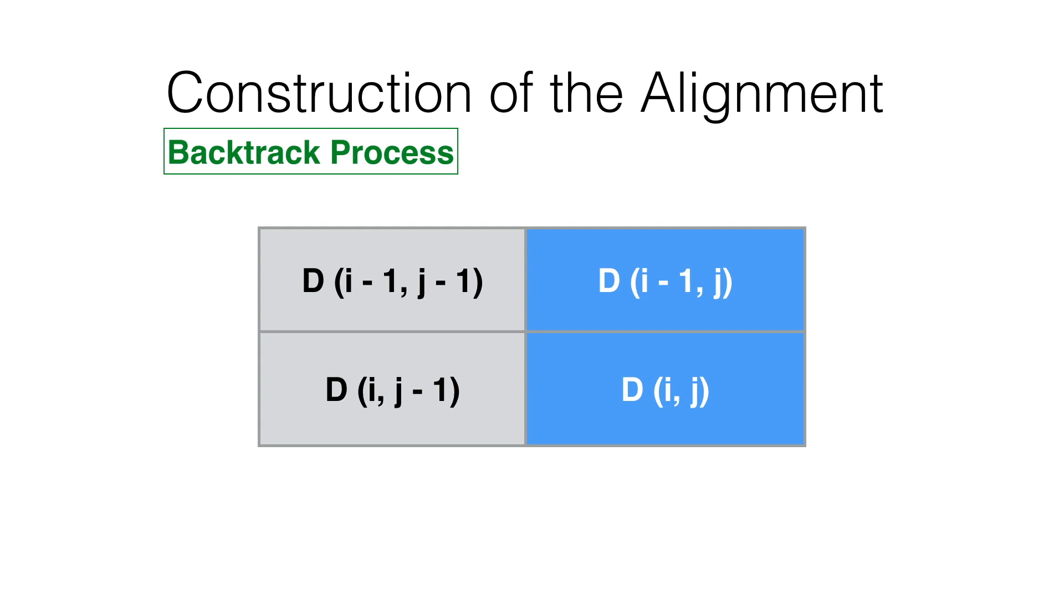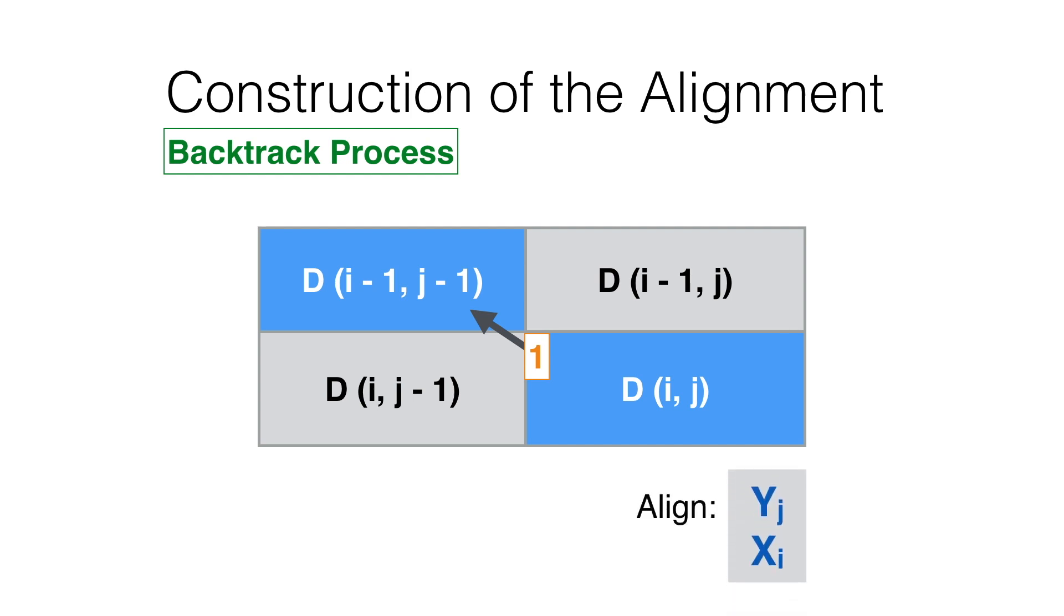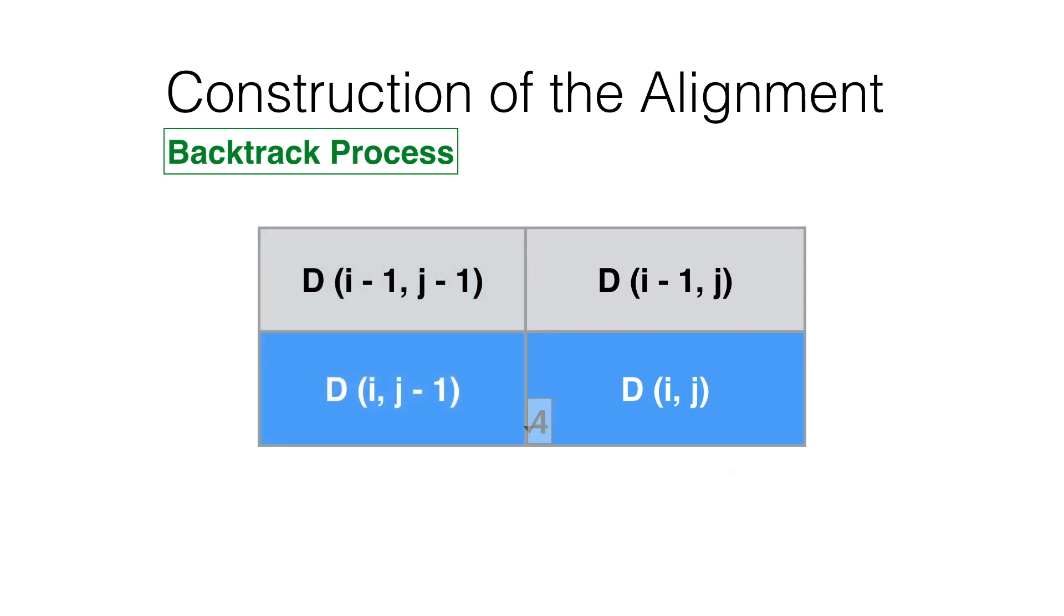More specifically, if we are in position (i,j) and the array of pointers has a 2 in its (i,j) position, one moves one cell up and aligns the character X_i with a gap symbol. If the array of pointers has a 1 in the (i,j) position, one moves one cell across the diagonal and aligns the characters X_i and Y_j. Finally, if there is a 4 in the (i,j) position of the array of pointers, one moves one cell to the left and aligns Y_j with a gap symbol.